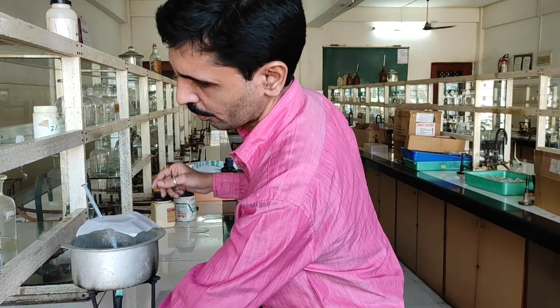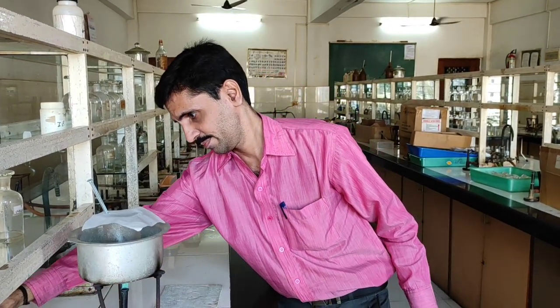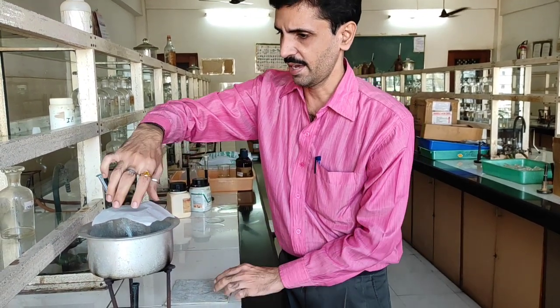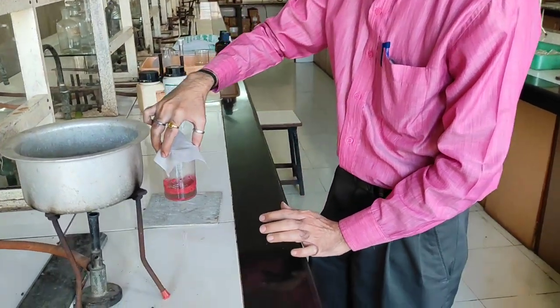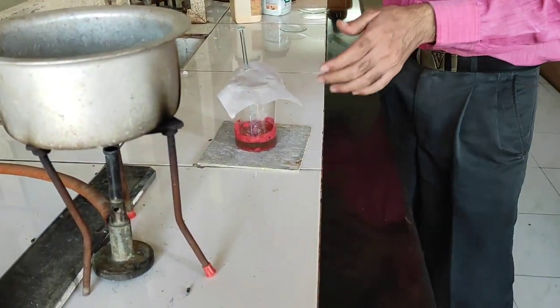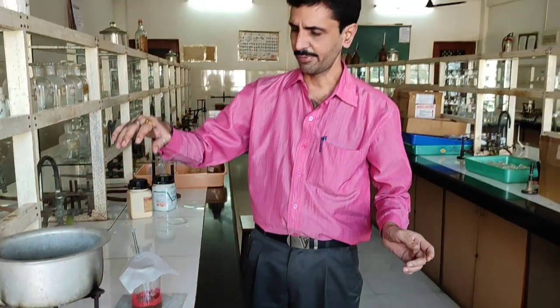My dear friends, we can see that 30 minutes are done after the digestion process. So we will just put off the burner. Very slowly we will hold the beaker and put it on the asbestos sheet. This is what we get after the process of digestion. Now once the digestion process is done, let us allow it to cool on the asbestos sheet for some time.